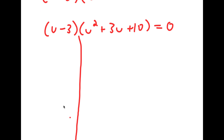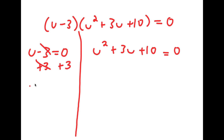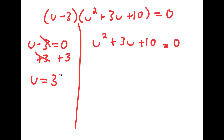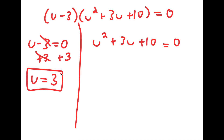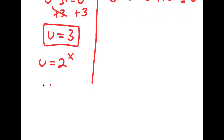This gives me two equations: u minus 3 is equal to 0, and u squared plus 3u plus 10 is equal to 0. For u minus 3 equals 0, all I have to do is add 3 on both sides, and I get u is equal to 3. Now, remember we let u equal 2 to the power of x, meaning 2 to the power of x is equal to 3.